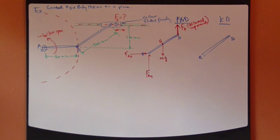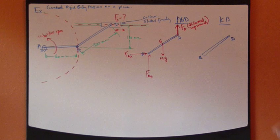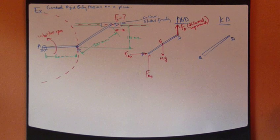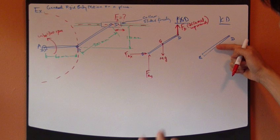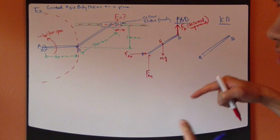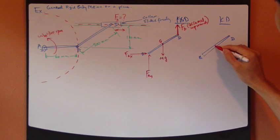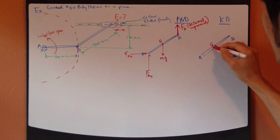Move on to kinetic diagram. For kinetic diagram you draw the acceleration. So we're going to split the acceleration into the pure rotational part and then the translational part with respect to center of gravity G.